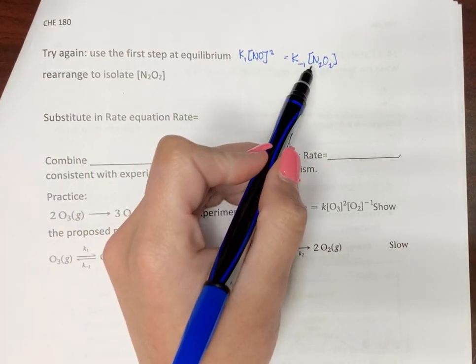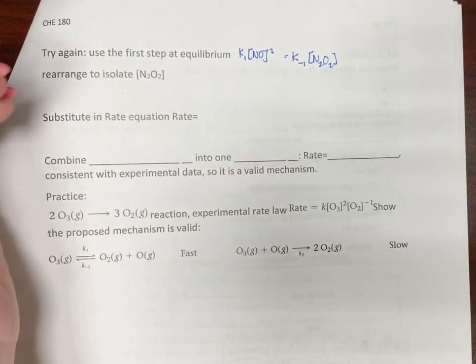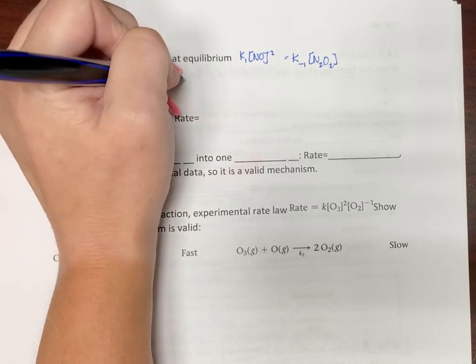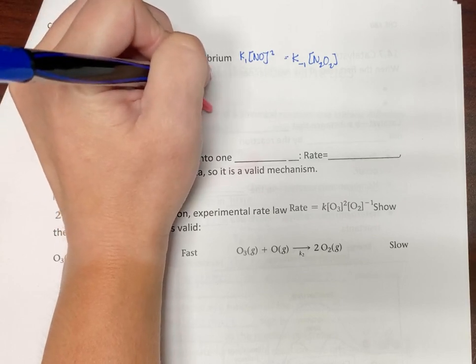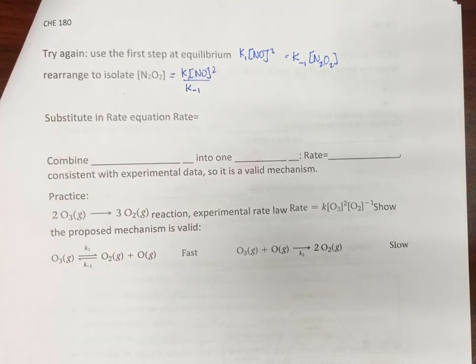So let's rearrange and get N2O2 by itself. So N2O2 would be K1, NO squared, over K negative 1.